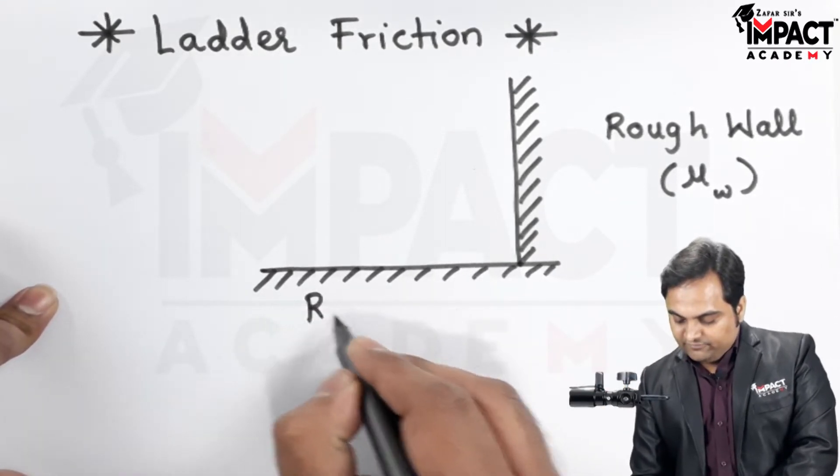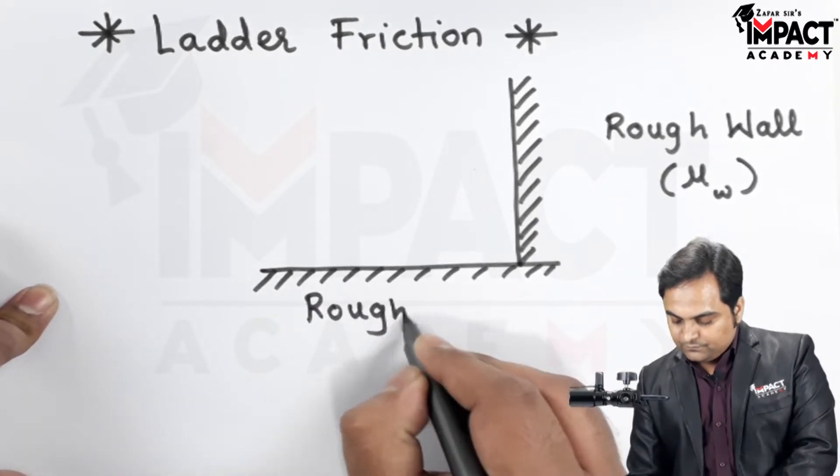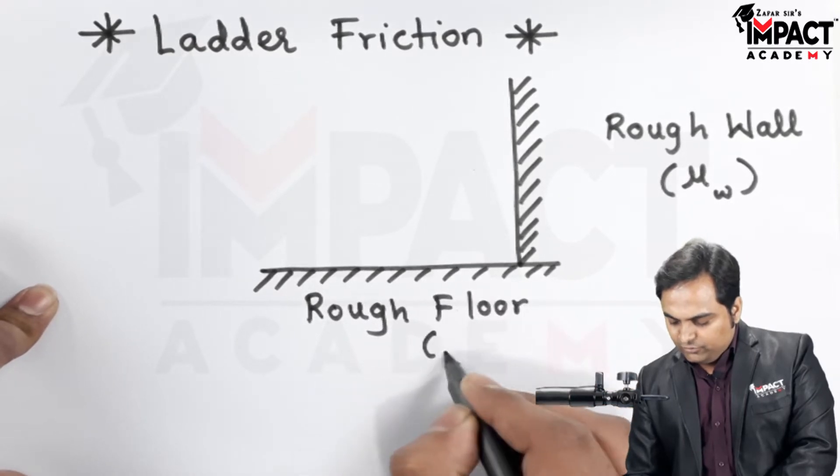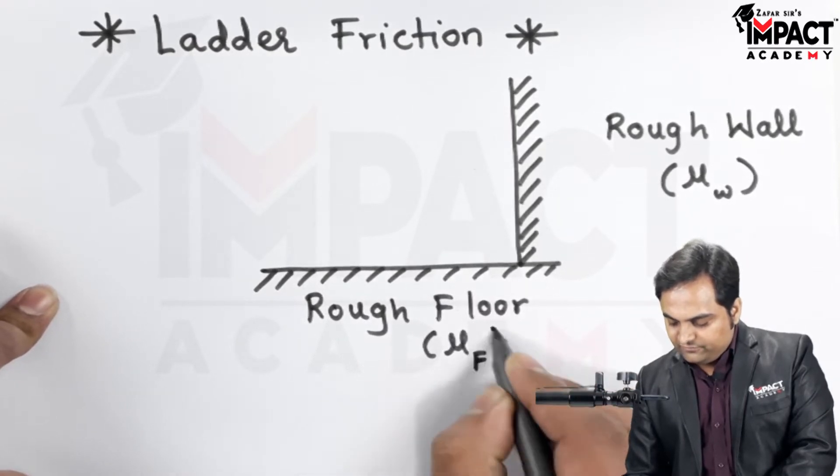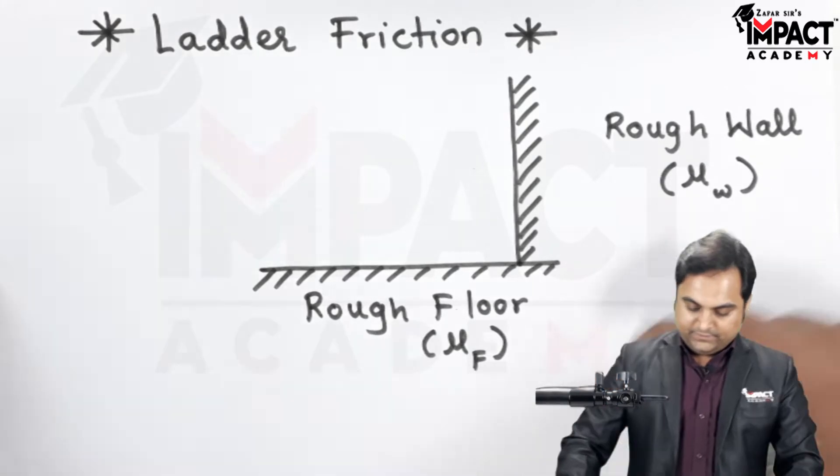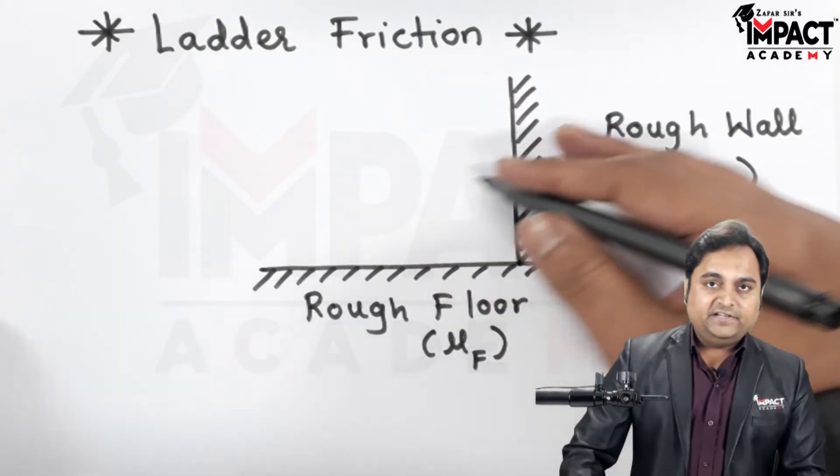Here there is a rough floor having coefficient of friction mu suffix f for the floor. Then there is a ladder I am indicating.